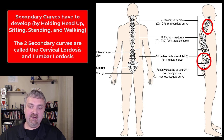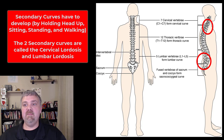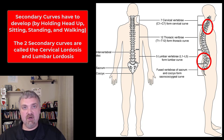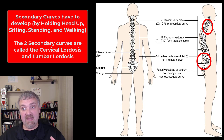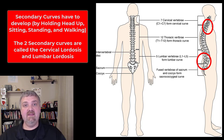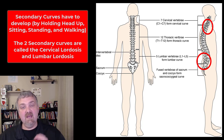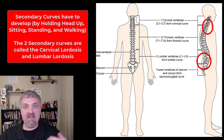Our secondary curves are the ones that gradually develop over time, and they're going to be a lordosis. So you have your cervical lordosis and your lumbar lordosis. The cervical curve starts to develop first as you start to hold your head up — think about tummy time for a baby, how it helps develop the muscles of the head and neck, and as they start to hold their head up, the cervical curve will develop. The lumbar curve starts to develop with sitting, standing, and walking.